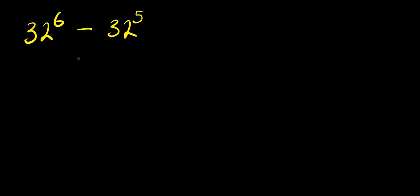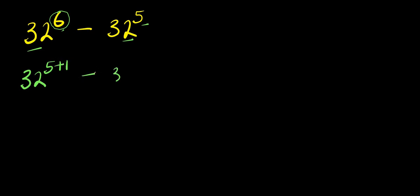Hello, how to evaluate without our calculator: this is 32 to the power 6 minus 32 to the power 5. I can express 6 as the summation of 5 and 1, so I have 32 to the power (5+1) minus 32 to the power 5.